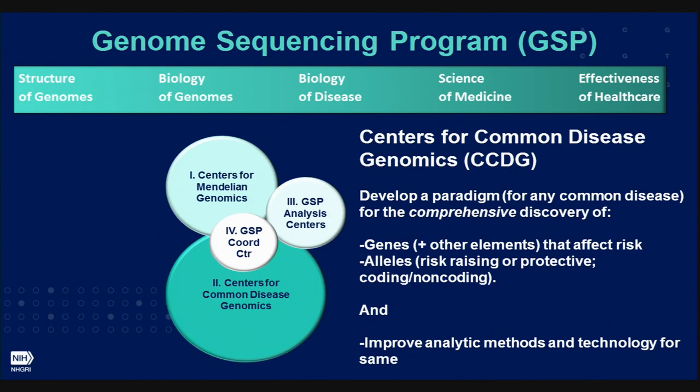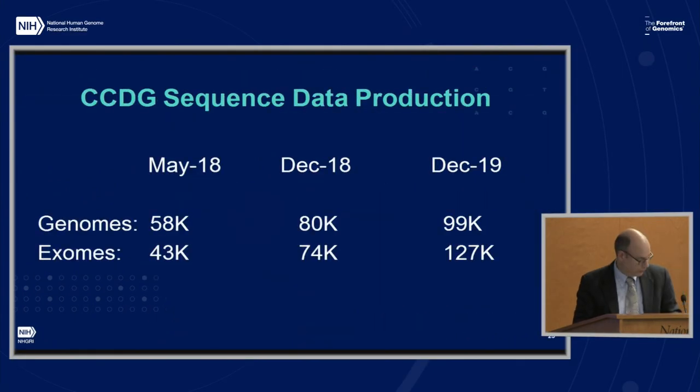Back to the Centers for Common Disease Genomics. For Mendelian disease, caused by rare variants with very strong effect, there are now very many examples of finding the responsible variants, and the success rate at the CMGs is approaching 50 percent. For common disease, I'm much less sure — I think a lot of the time we still don't know what we're doing. I'll return to this point at the end of the presentation. First, some basic progress by the numbers.